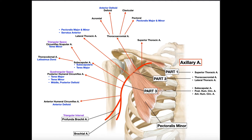Part one of the axillary artery begins when the subclavian artery crosses over the margin of the first rib, and continues until we reach pectoralis minor. The only branch that comes off of part one is the superior thoracic artery.